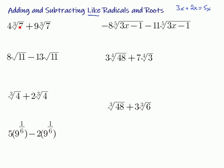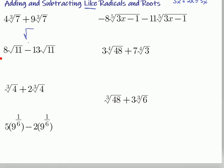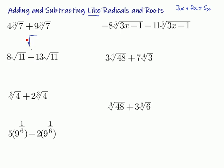4 times the cube root of 7, plus 9 times the cube root of 7. These two things are the same, so I'm just going to write that part down. We have the cube root of 7, and there's 4 of them because it's 4 times that. Here there's 9 of them, so 4 plus 9 is 13. So, 13 times the cube root of 7.